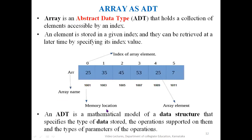An array is also an abstract data type that can hold a collection of elements accessible by an index. To access any element from an array, we retrieve it by specifying its index value. For example, the array ARR has six elements — 25, 35, 45, 53, 25, and 7 — with index values from 0 to 5, each stored at specific memory locations. Using abstract data type, we can know the type of data stored and the different operations that can be performed on them.